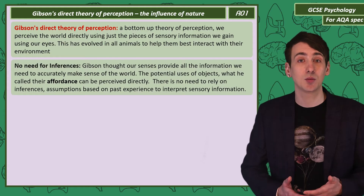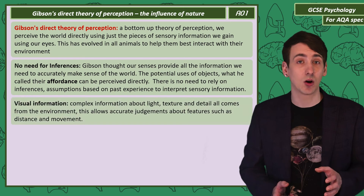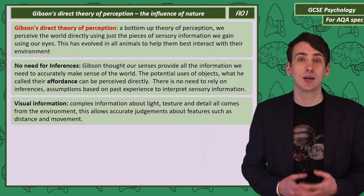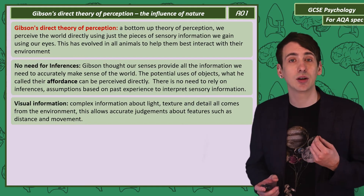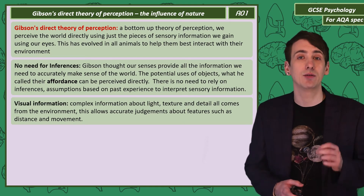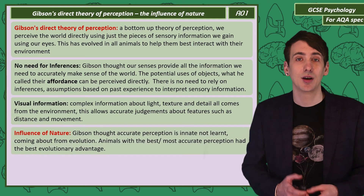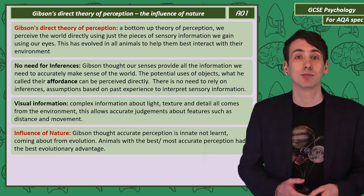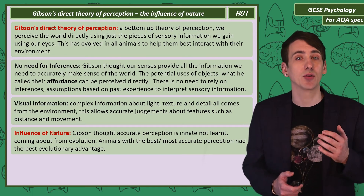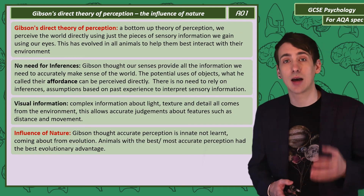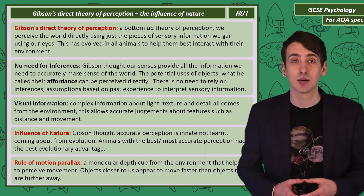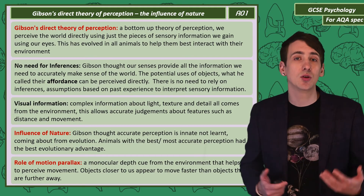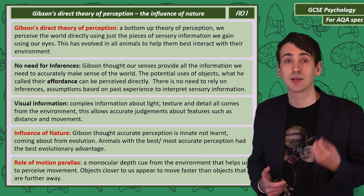We don't need to rely on past experiences and inferences with apples to use them. The visual information we gain from our eyes is complex — shades of light and colour, texture and details — they're all perceived directly. This information allows an accurate and direct perception of the world, including the features of objects like distance. Gibson's theory focuses on nature and its role in perception, suggesting that we have everything we need for accurate perception from birth, so accurate perception is innate. He argued that from an evolutionary perspective, animals would evolve to have the most accurate perception to help them survive. One monocular depth cue that Gibson pointed to from the environment is motion parallax — things closest to us appear to move faster than things in the distance, as you've likely noticed when in a car or a train.